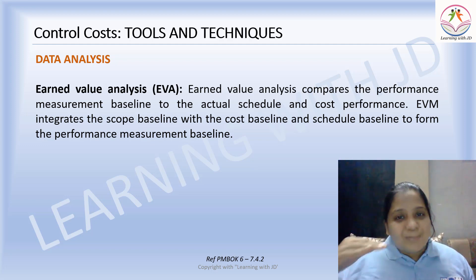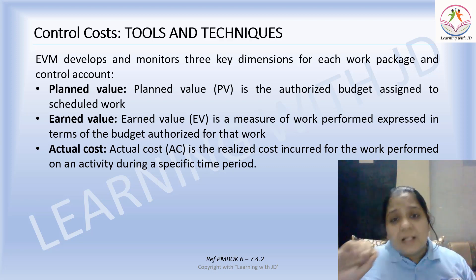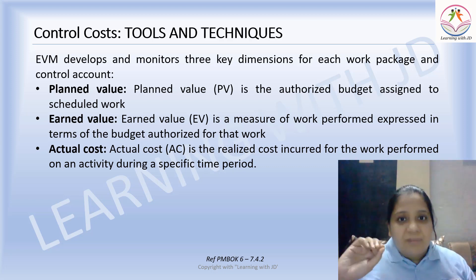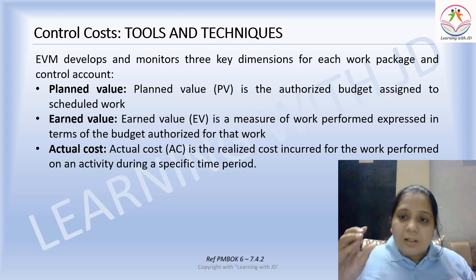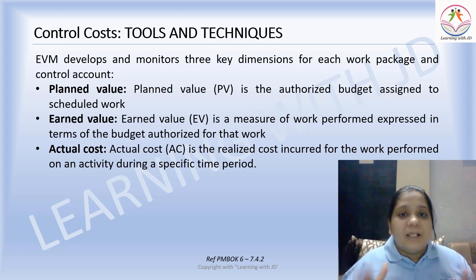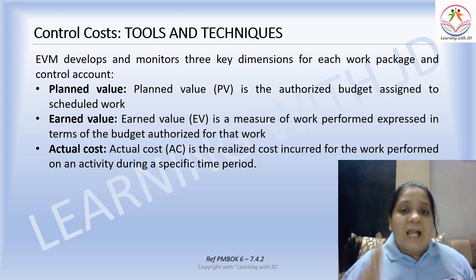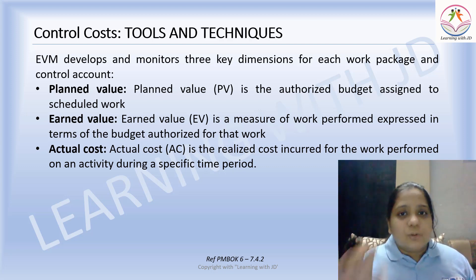EVM develops and monitors three key dimensions for each work package. Planned Value (PV) is the authorized budget assigned to scheduled work — how much work needs to be completed. For example, if one-fourth of the work is worth 100 rupees, then PV equals 100. This is the budget assigned to a particular scheduled work.